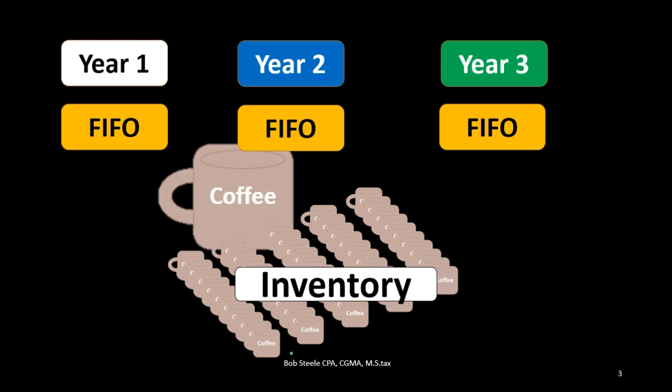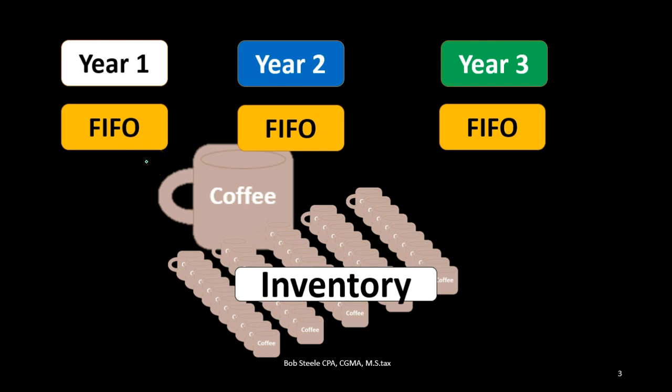We can see that if we change the first in first out assumption — compared to the last in first out assumption — during a period of rising prices, net income would be higher under a first in first out assumption and lower under a last in first out assumption.